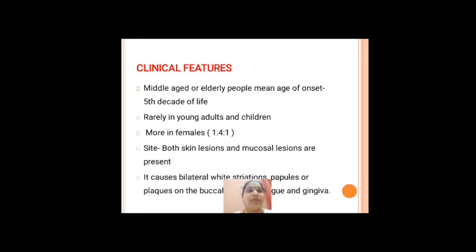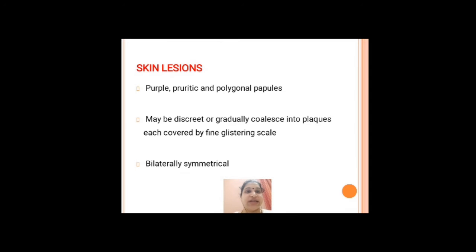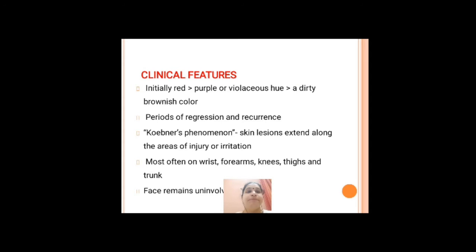Stress has been indicated as one of the major factors. It is very common in about the fifth decade of life and has a more female predilection. Skin lesions will appear as purple, pruritic, polygonal papules — the classic 6 P's. They appear bilaterally symmetrical. There is a phenomenon called the Koebner phenomenon, where skin lesions appear along areas of irritation or injury.